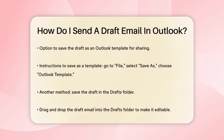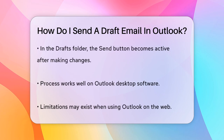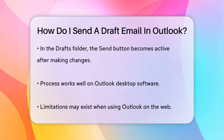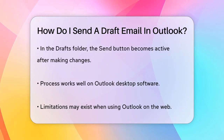Another method is to save the draft email in your Drafts folder. When you attach a draft email, it opens as read-only, so you need to move it to the Drafts folder first. You can do this by dragging and dropping the attachment into the Drafts folder. Once it's in the Drafts folder, you can open it, make any necessary changes, and the Send button will be active.